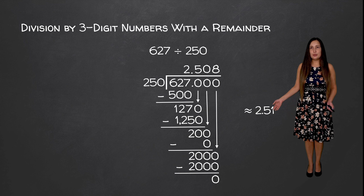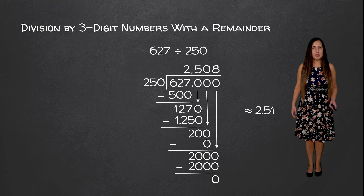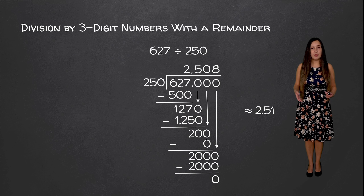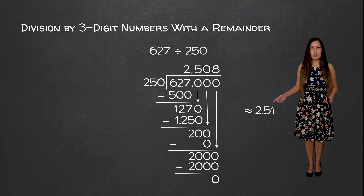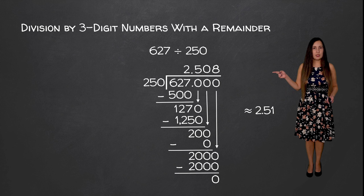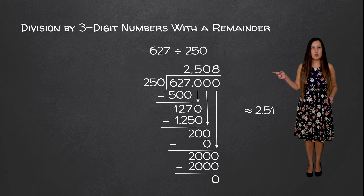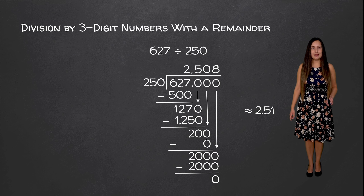Usually we round to the hundredths place because a lot of times we are talking about things like money. When we are dealing with values like money, we would write $2.51 as opposed to writing 2 and 508 thousandths, because our smallest value for money is pennies, which is in the hundredths place.